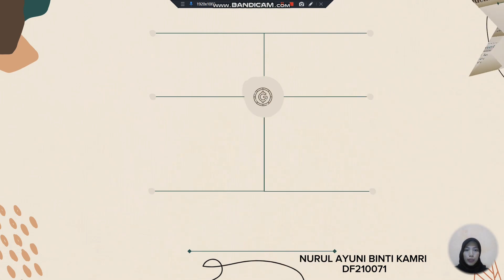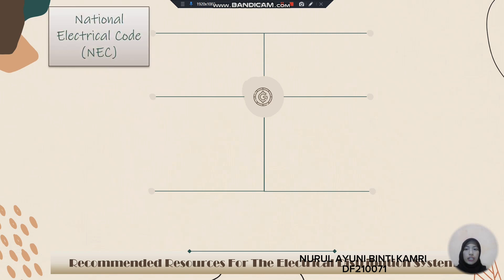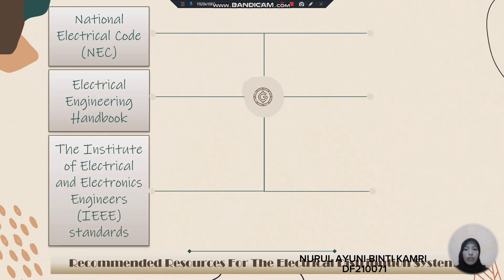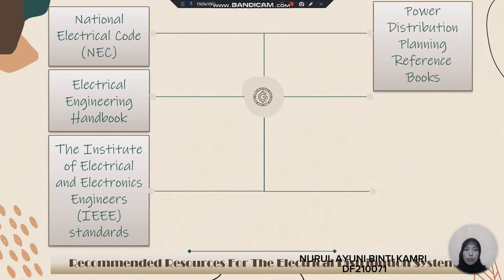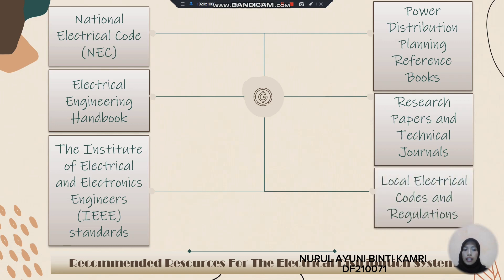For the last part, I want to present the recommended resources for the electrical distribution system. These include the National Electrical Code (NEC), the Electrical Engineering Handbook, the Institute of Electrical and Electronics Engineers (IEEE) Standards, the Power Distribution Planning Reference Book, thesis papers and technical journals, and finally Local Electrical Codes and Regulations. That's all for me. I pass this presentation to the next presenter.